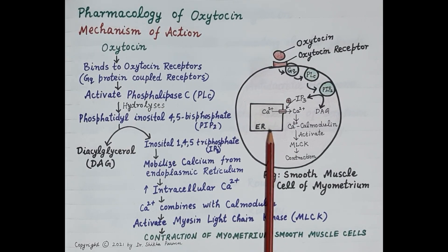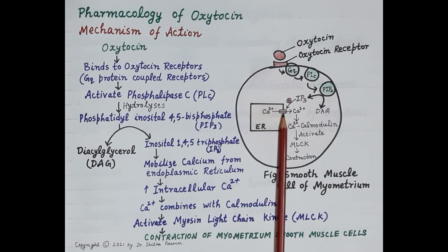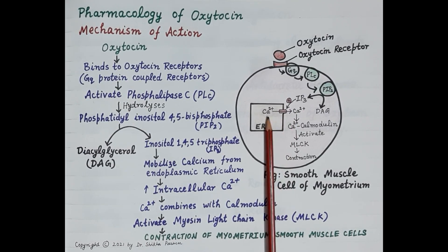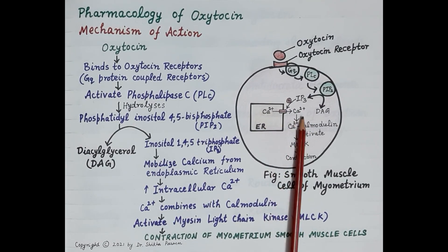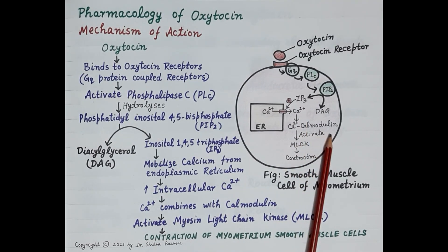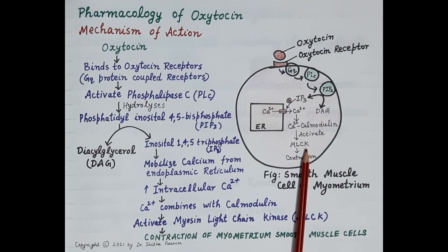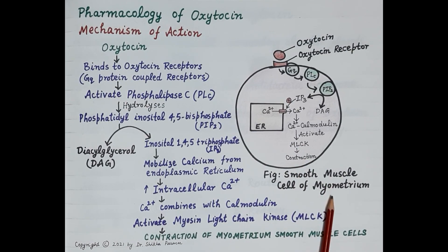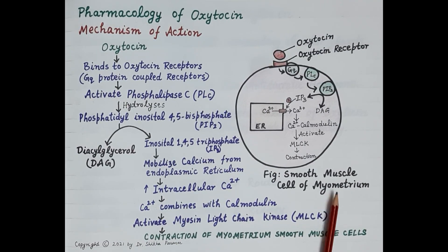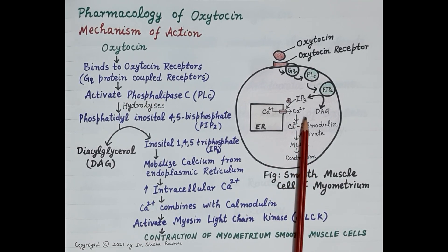IP3 opens calcium channels of the endoplasmic reticulum in the cytoplasm of smooth muscle cells. Calcium then moves from the endoplasmic reticulum into the cytoplasm, increasing cytoplasmic calcium. Calcium binds to calmodulin, which activates myosin light chain kinase. Once activated, myosin light chain kinase induces contraction of smooth muscles, resulting in contraction of the myometrium and powerful uterine contraction.